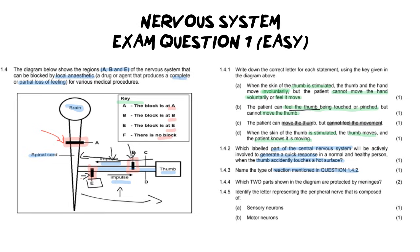For question four, it says which two parts shown in the diagram are protected by meninges? So this is some knowledge for you and that's going to be the brain and spinal cord. Again, if you're not so much aware of all of your nervous system structures, you should click the card above now where I go through the structures of the nervous system.